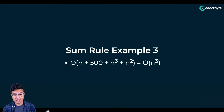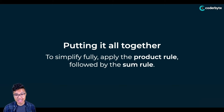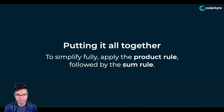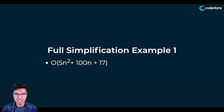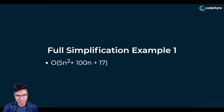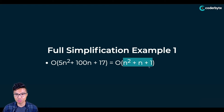Now that we understand both the product rule and the sum rule, we can put it all together. To simplify something fully, apply the product rule followed by the sum rule. Given the unsimplified Big O of five n squared plus 100n plus 17, first apply the product rule: drop all constant multipliers — drop the five, drop the 100, turn 17 to just one — giving n squared plus n plus one. Then among these three terms, apply the sum rule and choose the biggest: n squared. The final answer is O of n squared.